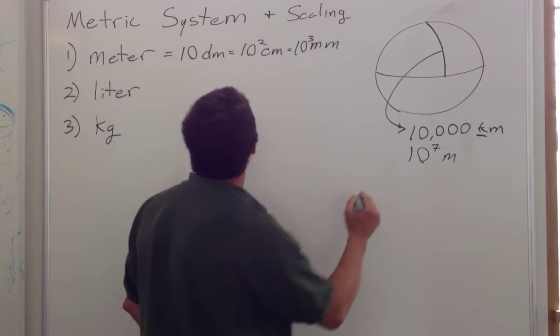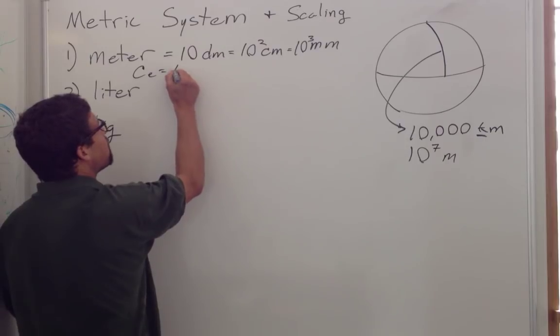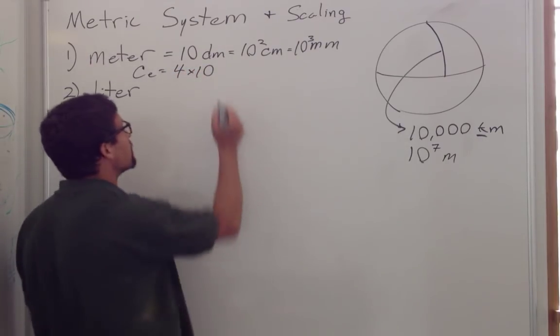This also gives us a good idea that the circumference of the Earth is equal to four times 10 to the seventh, or 40 million meters.